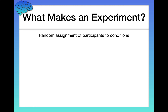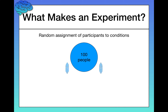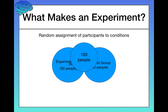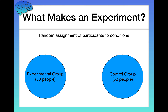For example, let's say you're a researcher and you want to test whether a new medication is successful at treating depression. You might start with 100 people, and your first job is to randomly choose half of those people to go into an experimental condition, and the other half to go into a control condition.